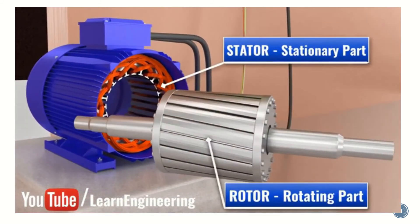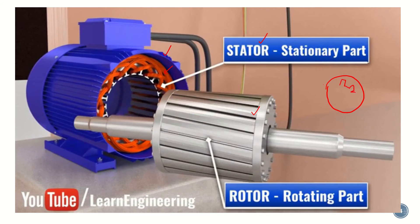A basic machine consists of two main components. The first is the stationary part, which we call the stator. Inside the machine the stator has coils wound around it, called stator coils. Then we have a moving part called the rotor, which is the part that rotates inside the machine. If we draw this in 2D, it looks like a circle — this is the outer part of the machine — and inside we have the stator.